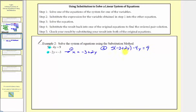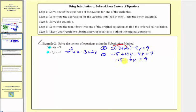Step 3: we want to solve this equation, so we'll distribute 5 and then solve for y. We'd have negative 15 plus 10y minus 4y equals 9. Combining like terms, 10y minus 4y is 6y, so negative 15 plus 6y equals 9. To isolate 6y, we add 15 to both sides. 9 plus 15 is 24, so we have 6y equals 24. Dividing both sides by 6, 24 divided by 6 is 4, so y equals positive 4.